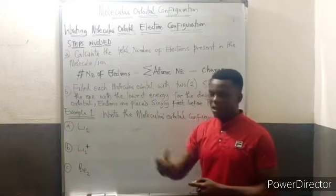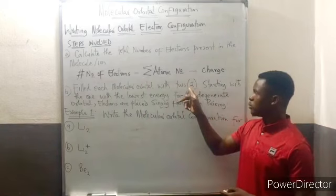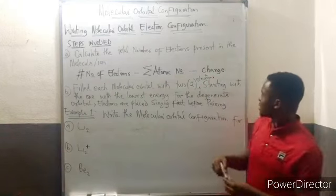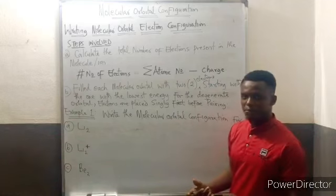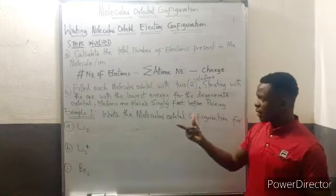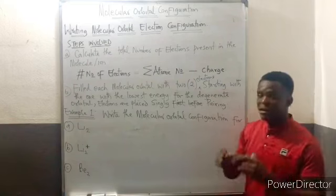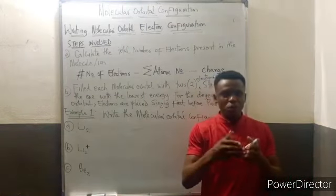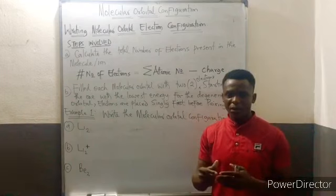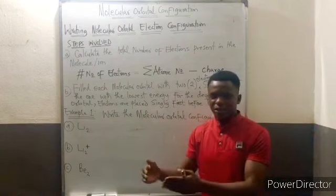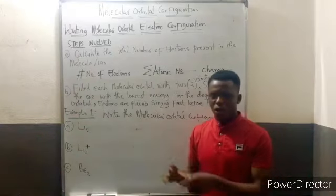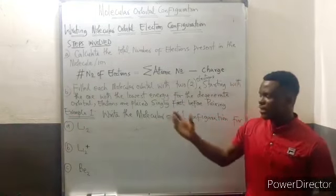The next step is to start filling each molecular orbital with two electrons, starting with the one with the lowest energy. For degenerate orbitals, electrons are placed singly first before pairing. The degenerate orbitals are the pi 2py and pi 2pz — those two are of the same energy. Similarly, the antibonding pi 2py and antibonding pi 2pz are also degenerate.